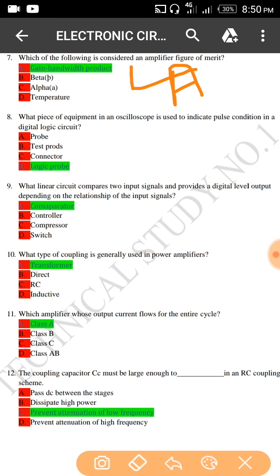What piece of equipment in an oscilloscope is used to indicate pulse condition in a digital logic circuit? Basically logic probe, option D is the right answer.